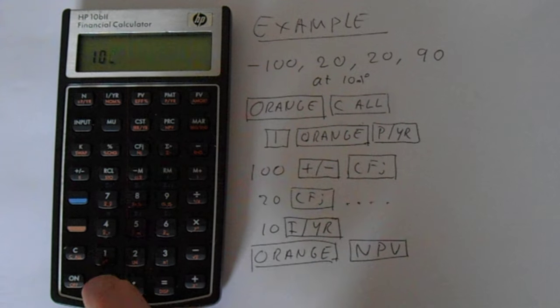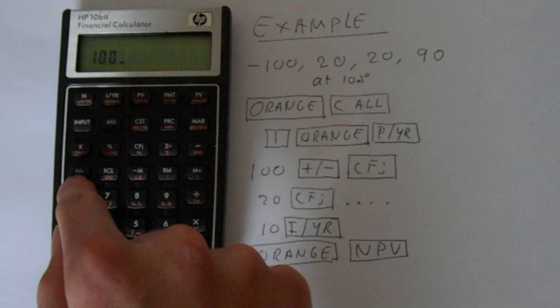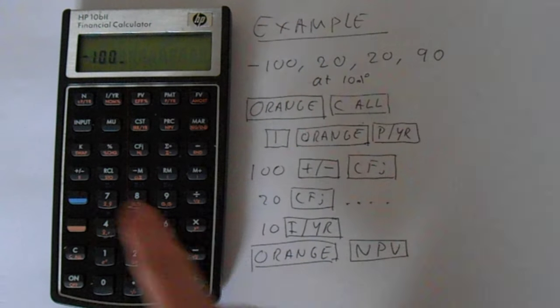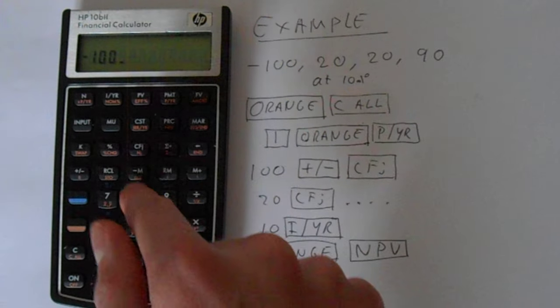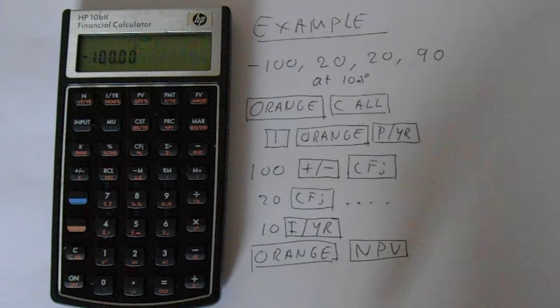Now we can enter our cash flow. We go 100 and then use this button here, the plus slash minus, to change the sign. Don't use the negative, use this one up here, and then enter that into CFJ.